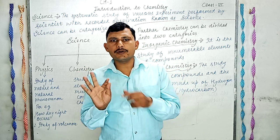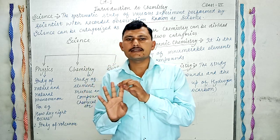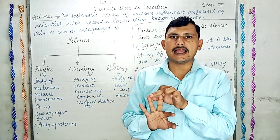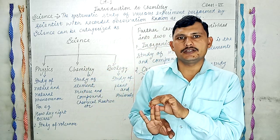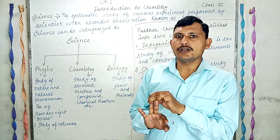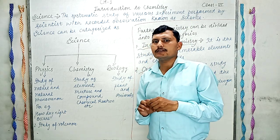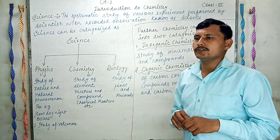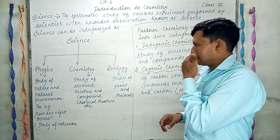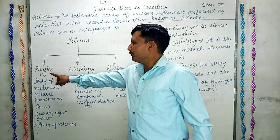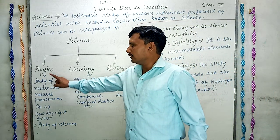Now, further, science can be categorized into three main categories: number one, Physics; number two, Chemistry; and number three, Biology. Now let us define what is the definition of Physics.